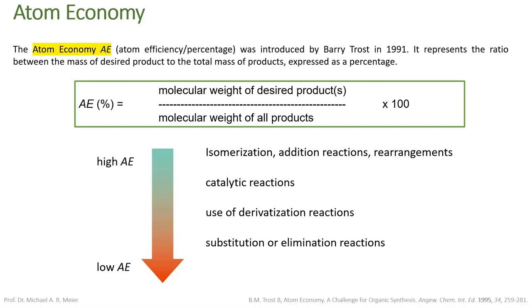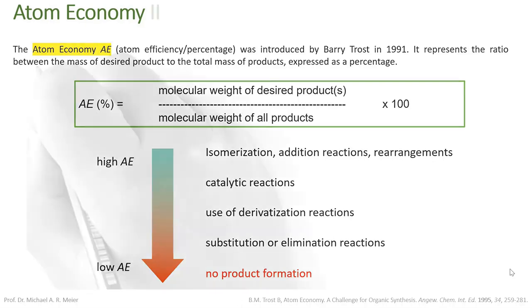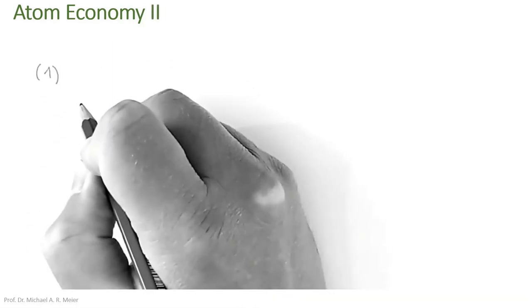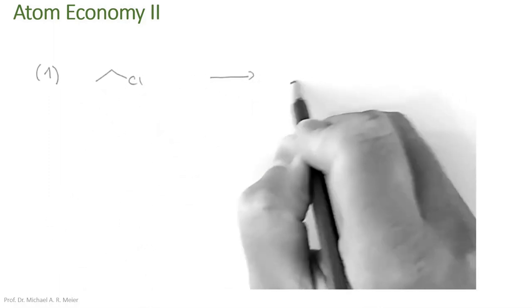The worst outcome in terms of atom economy is no product formation at all. Atom economy is always relative — if a certain product is needed, you want to choose the best way to get there. Let's look at an example of how to calculate atom economy and what these numbers actually tell us.